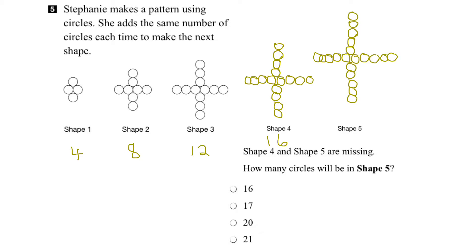So we've added 4 more circles, 1, 2, 3, 4, to give us a total of 20 circles in shape 5.